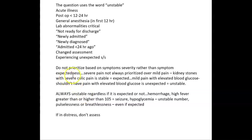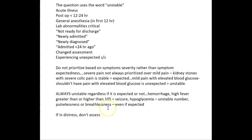Some reminders: don't prioritize based on symptom severity rather than symptom expectedness. Severe pain isn't always prioritized over mild pain — a patient with kidney stones has expected pain, but a diabetic patient with arm pain has unexpected pain, making them the higher priority. Always considered unstable regardless of expectedness: hemorrhage, high fever, seizures, hypoglycemia with an unstable number, and pulselessness or breathlessness.